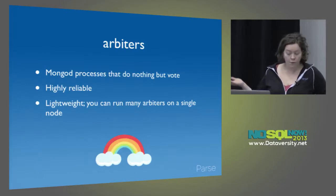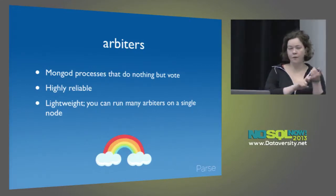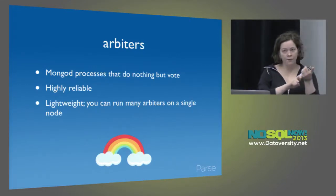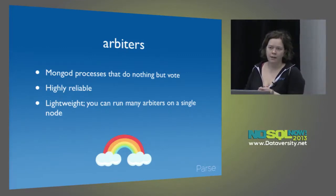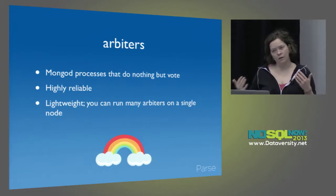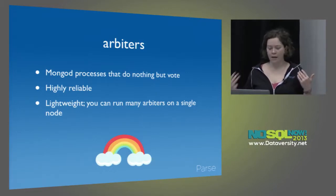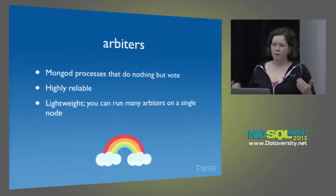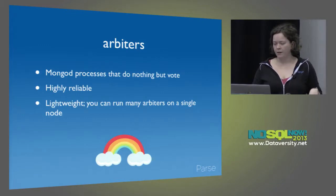Also, if you have four nodes, you have two options: you can take a vote away from one of your data nodes, or you can add an arbiter. Operating on the principle that more votes are always more robust, it's better to add the arbiter.